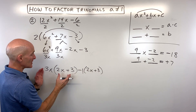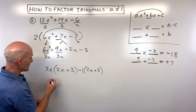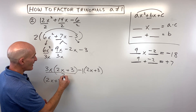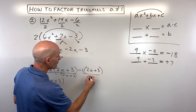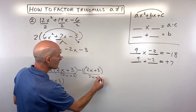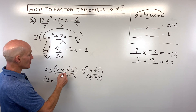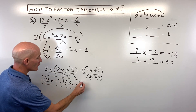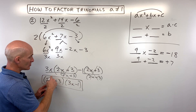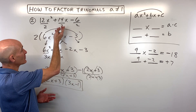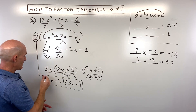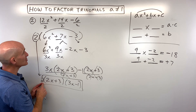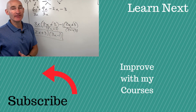Both groups now share the common factor 2x plus 3. Factor out 2x plus 3, and what remains is 3x minus 1. That gives the factored form (2x plus 3)(3x minus 1). Don't forget the greatest common factor of 2 we set aside — put it in front. So the complete factored form is 2 times (2x plus 3)(3x minus 1). You can FOIL the binomials and multiply by 2 to get back the original expression.